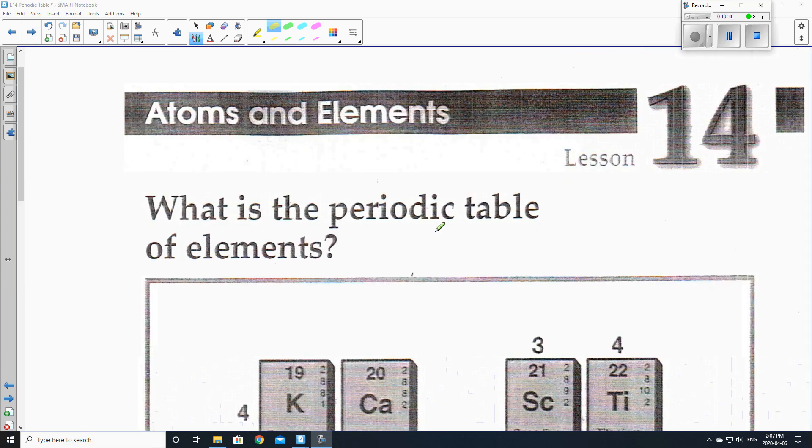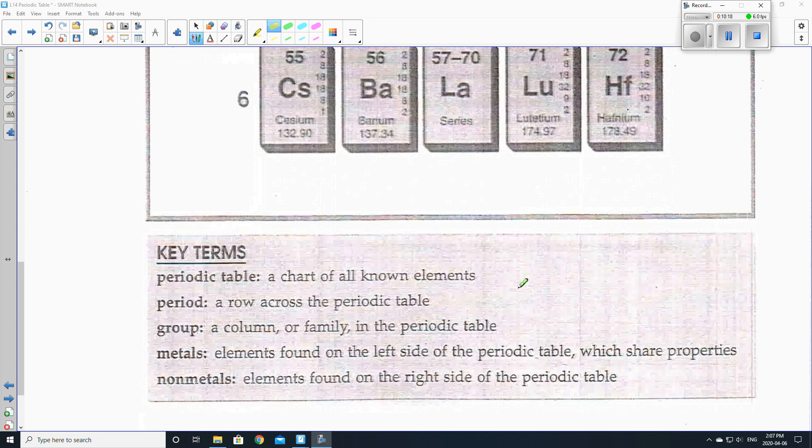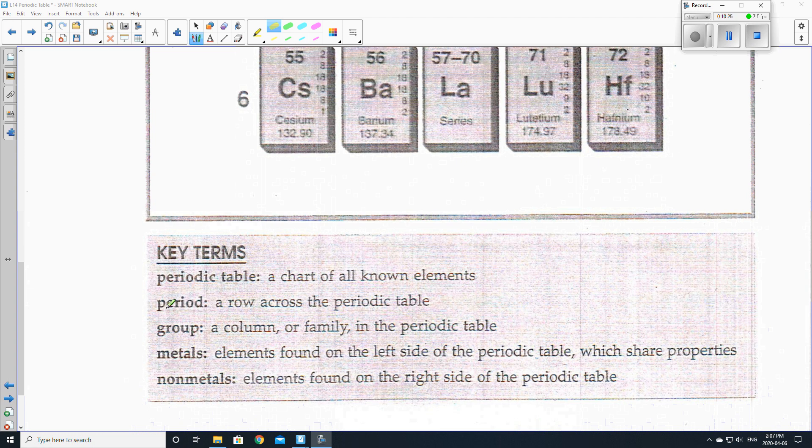So let's get on with our lesson. Lesson number 14, just according to the handouts. What is the periodic table of elements? So let's just go through some key terms. These are like vocabulary words. So the periodic table is a chart of all known elements. A period is a row, so it goes across the periodic table. The group, a group is a column, which means it goes up and down. Or sometimes rather than calling it a group, they call it a family on the periodic table because they have very similar characteristics. Metals are elements that are found on the left side. So elements that are on the left side are metals and they all share properties. And then the non-metals are elements that are found on the right side of the periodic table.